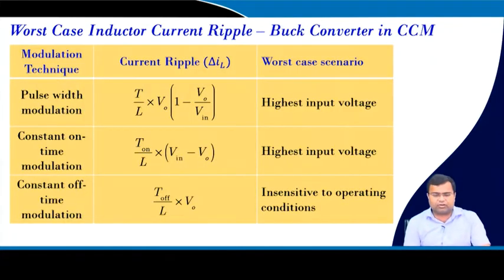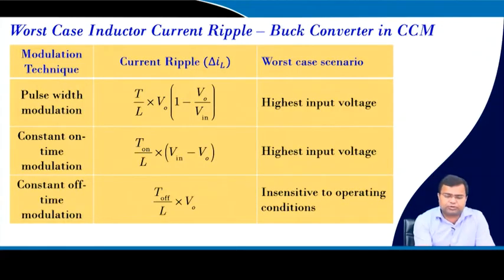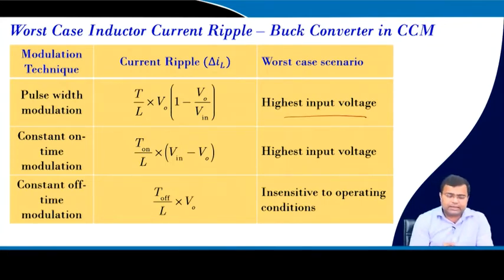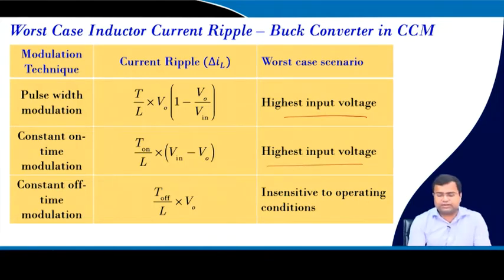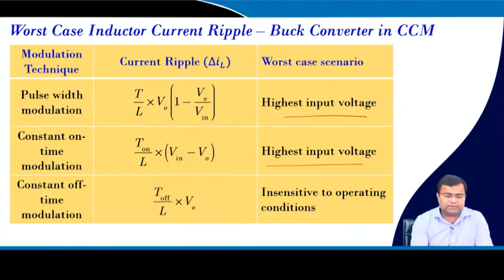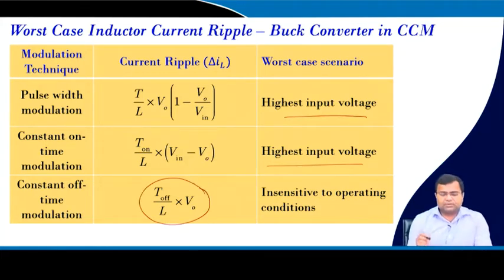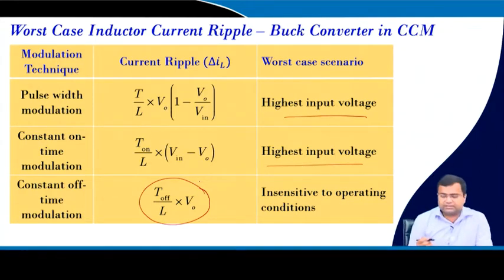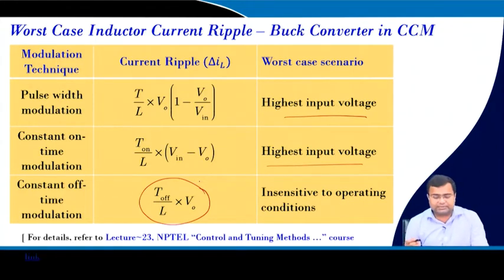The worst-case current ripple for the buck converter under pulse-width modulation is worst at the highest input voltage. Under constant on-time, the current ripple is also highest at the highest input voltage. Under constant on-time control, the current ripple is actually insensitive to input voltage, as discussed in lecture 23 of our earlier course.